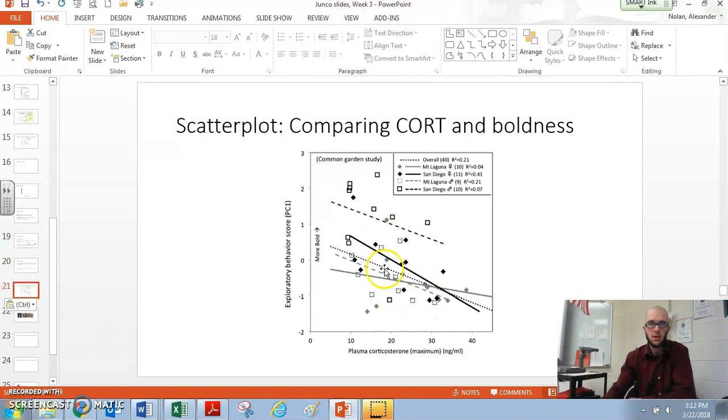This graph is really four scatter plots all superimposed on each other. In this scatter plot, you see the Mount Laguna females over here, the San Diego females, and then San Diego males way up here, and the mountain males down here. What we can generally conclude from looking at this scatter plot is that the more CORT that you have, this anxiety chemical, the more CORT that you have in the bird's blood, the less bold it behaves.